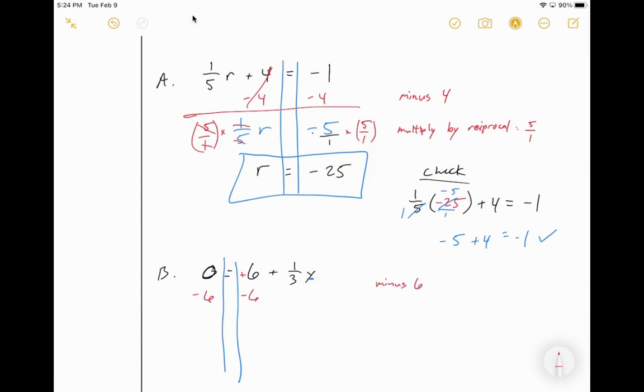So the first thing we're going to get rid of is this 6. Remember, this is a positive 6. So there's no plus sign in front, so we can just put one there. I need to subtract 6 to get that out of the way on both sides. Let's go ahead and cancel these out. This becomes 0 minus 6, or 0 plus negative 6 is negative 6. And I'm left with 1 third y.